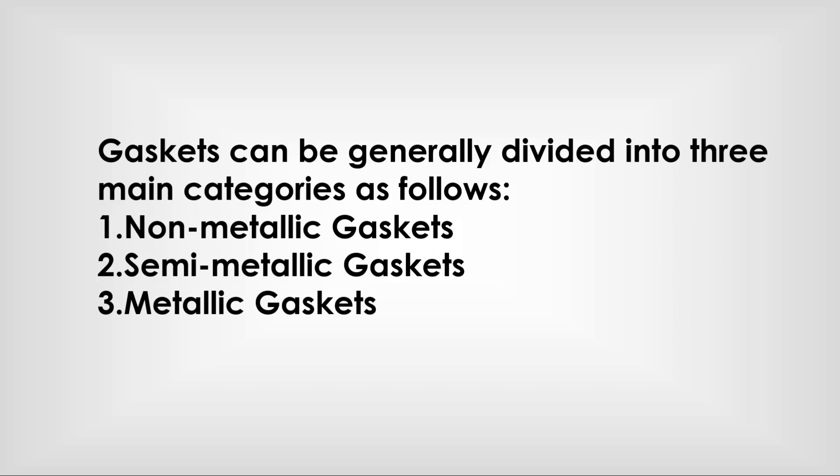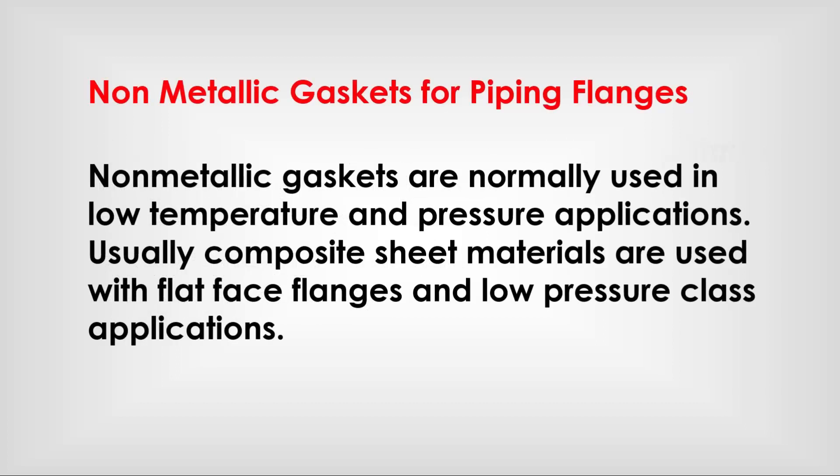Gaskets can be generally divided into three main categories: non-metallic gaskets, semi-metallic gaskets, and metallic gaskets. Non-metallic gaskets for piping flanges are normally used in low temperature and pressure applications. Usually composite sheet materials are used with flat face flanges and low-pressure glass applications.